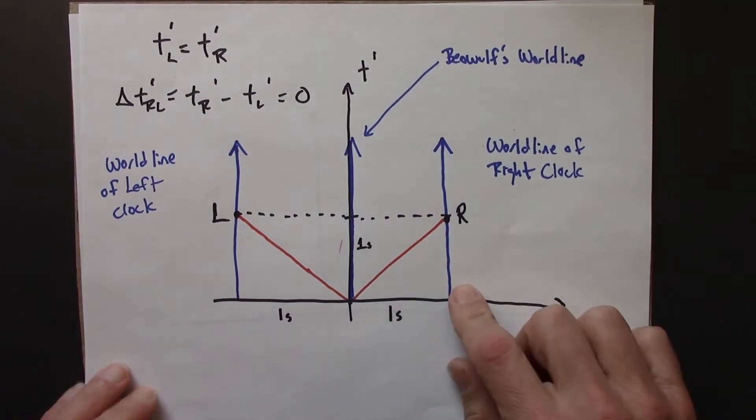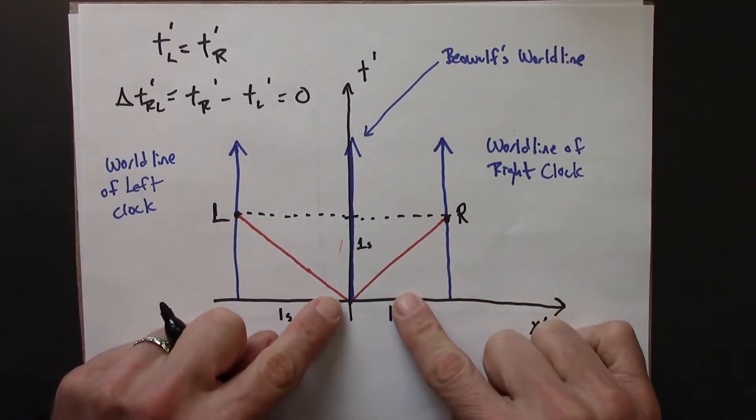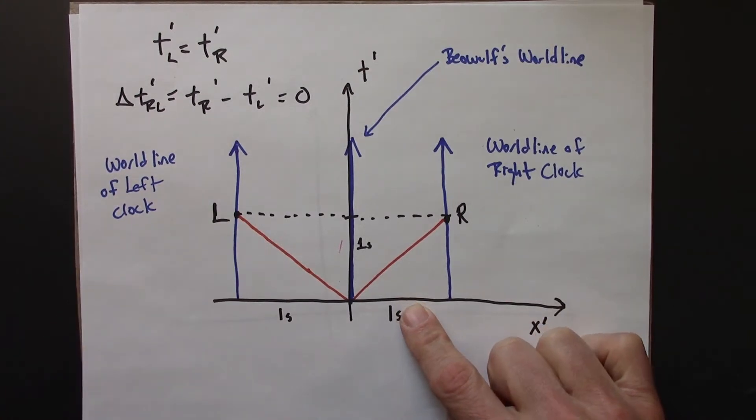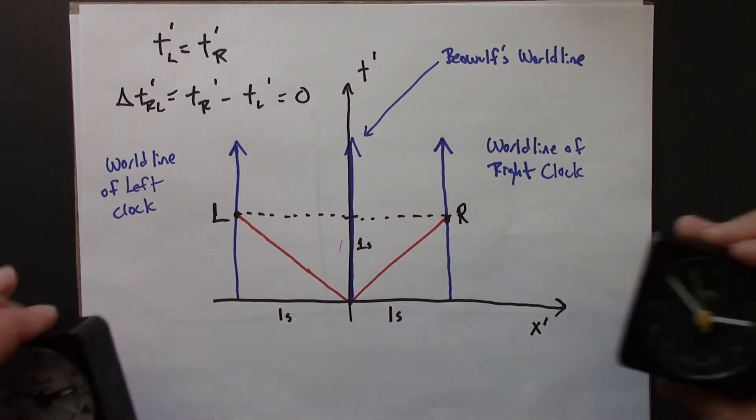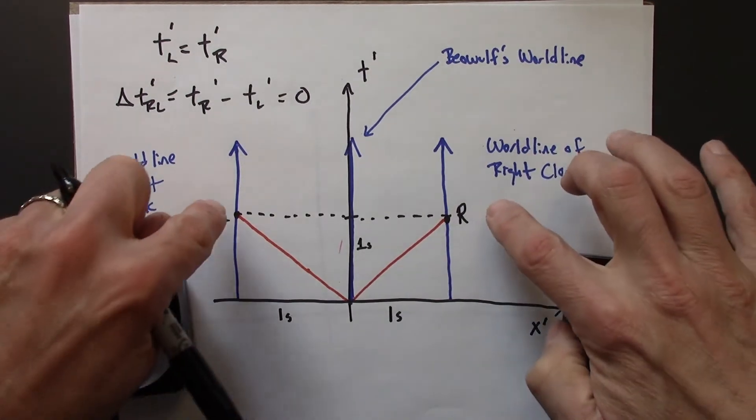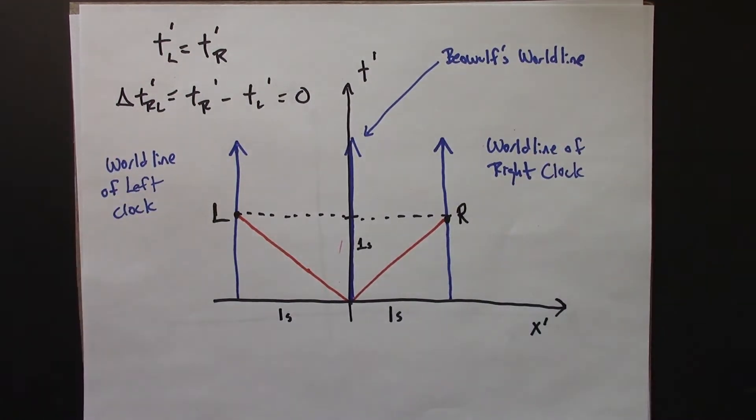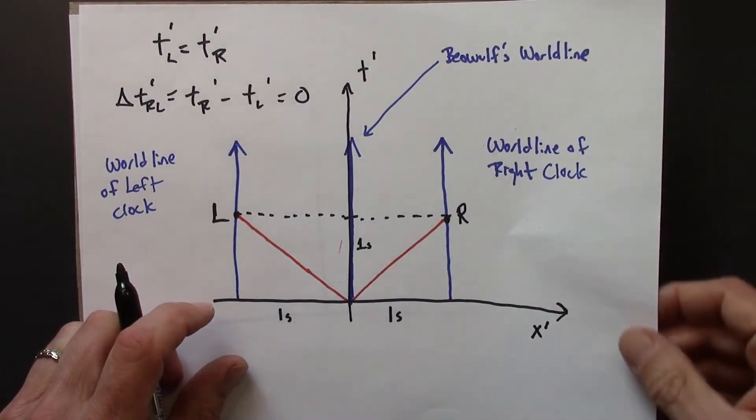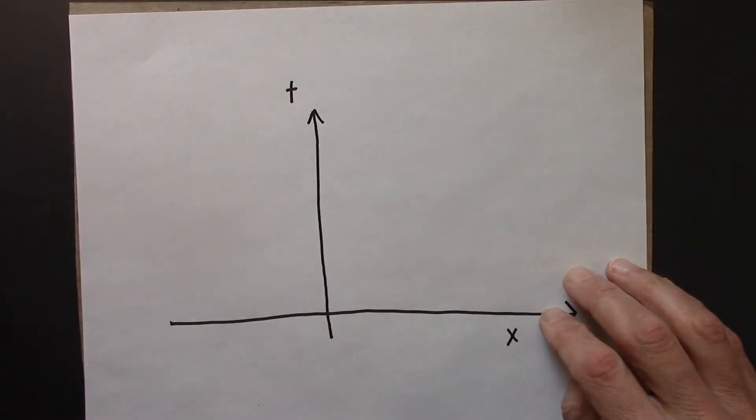Let's consider the same two events, L and R, the left light flash hitting the left clock and the right light flash hitting the right clock. Let's consider those events in Anastasia's frame, a frame that's at rest with respect to those clocks.